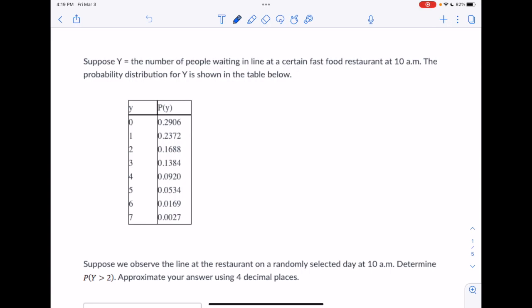Suppose Y equals the number of people waiting in line at a certain fast food restaurant at 10 a.m. The probability distribution for Y is shown in the table below. Suppose we observe the line at the restaurant on a randomly selected day at 10 a.m. Determine the probability that Y is greater than 2 and approximate your answer using four decimal places.